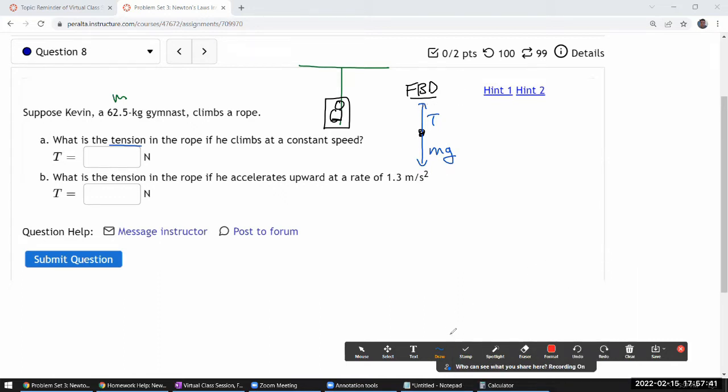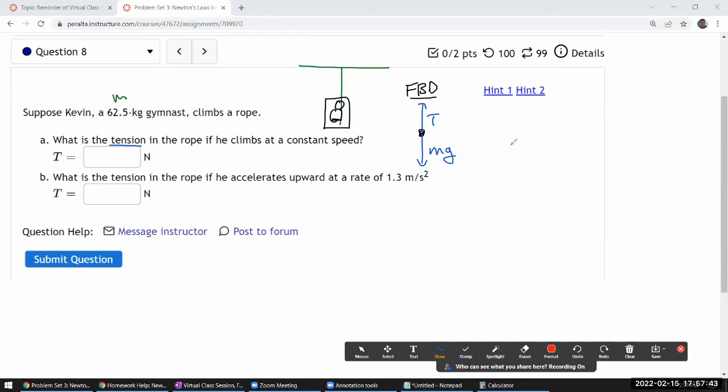And if we were to write down Newton's second law for this situation we would say net force is equal to, the work through upward being positive, tension pulling up minus mg is equal to mass times acceleration.